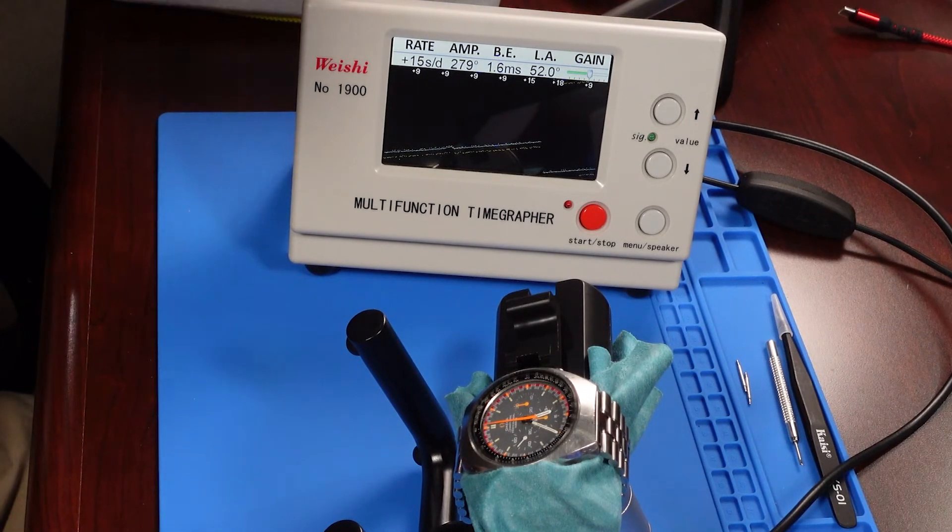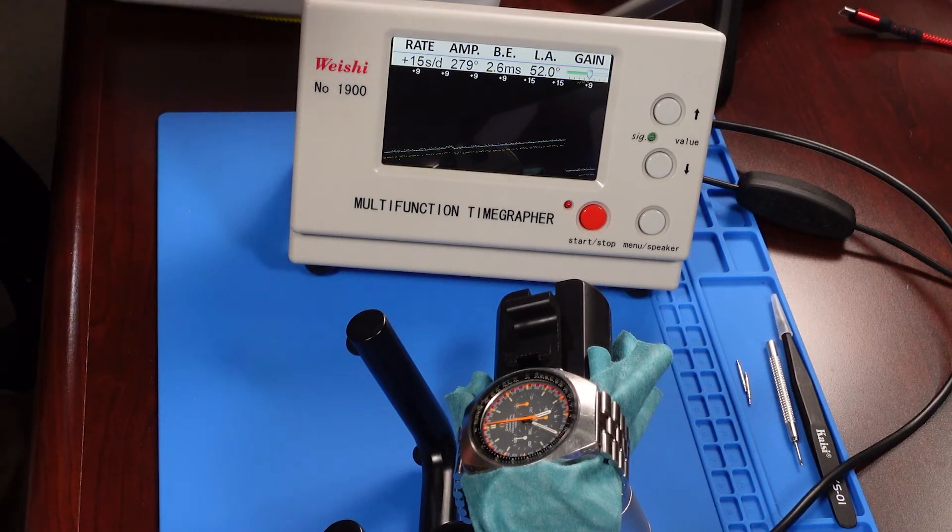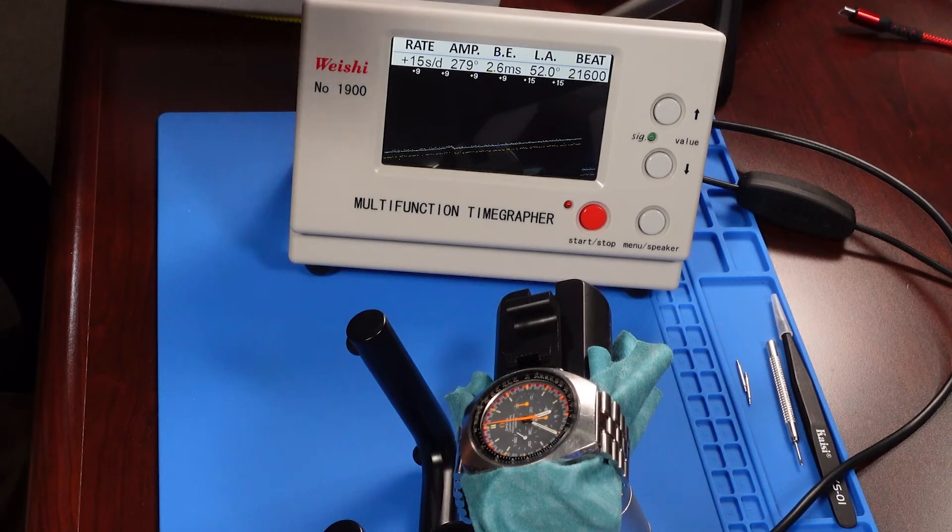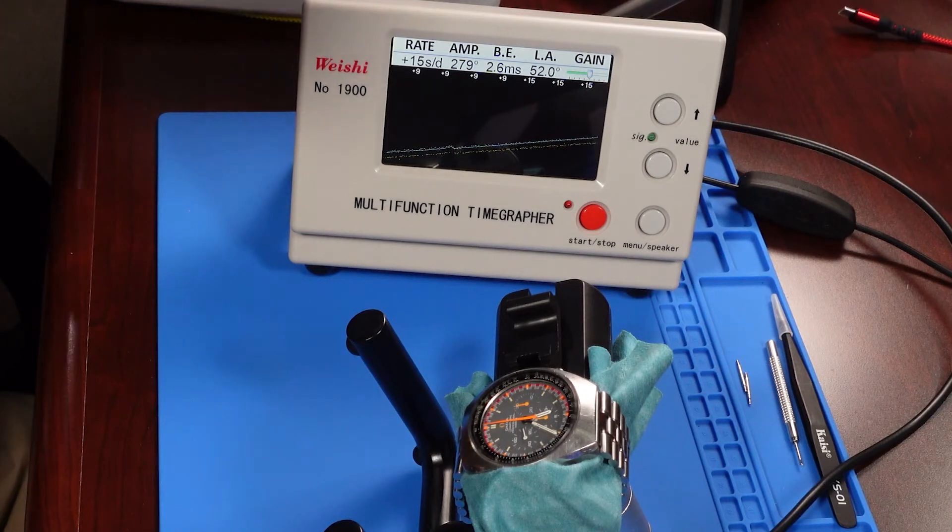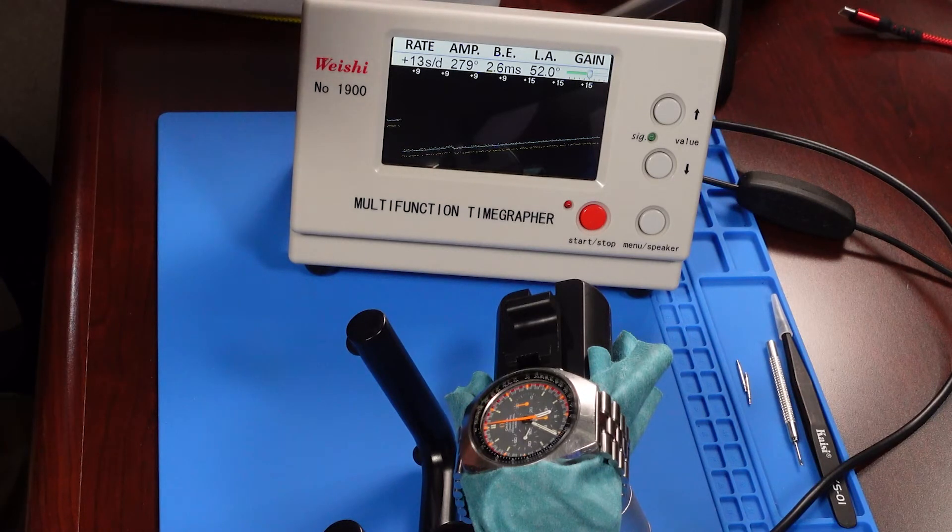That's how much of an arc the balance is bouncing back and forth inside the watch. So 279 degrees - I'm really happy. That is a strong pulse. This watch probably just needs a cleaning, a reassembly, some lubrication, and I'll bet we can get the beat error down, and we can then go in there and we can adjust that rate.